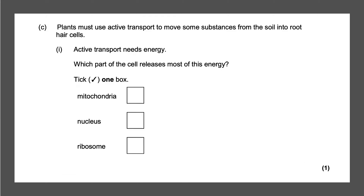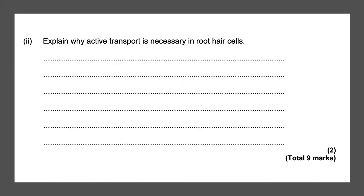Next question: plants must use active transport to move some substances from the soil into root hair cells. Active transport needs energy — which part of the cell releases most of this energy? Remember ribosomes are where protein synthesis happens and the nucleus controls the cell, so mitochondria release the most energy, and that will give you one mark.